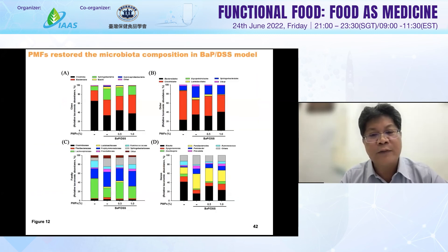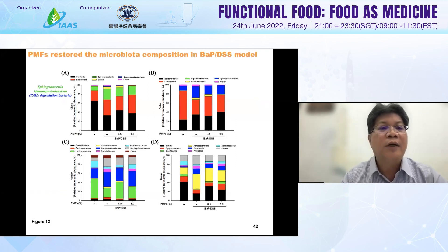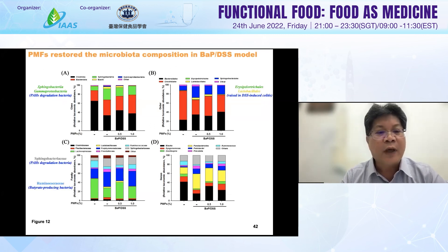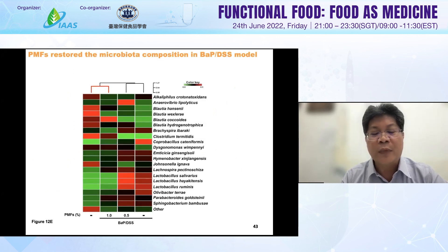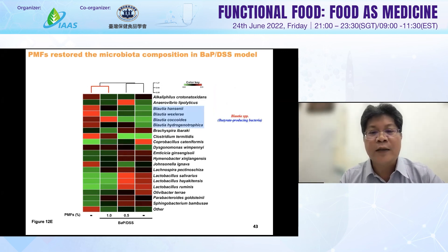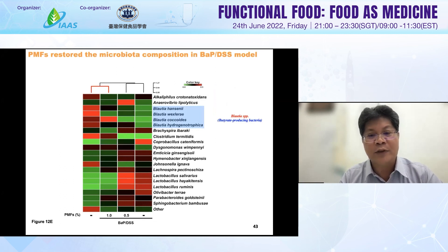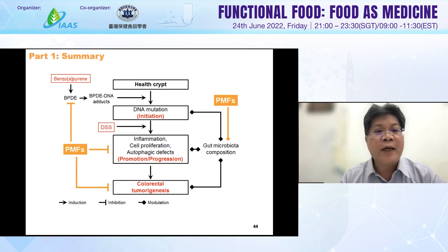We also checked the microbiota. We found single bacteria, PAH-degrading bacteria, and butyrate-producing bacteria, such as Ruminococcaceae. We also checked the microbiota profile and found interesting results: different kinds of genes were increased by PMF treatment and the BAP+DSS-induced gene changes in microbiota composition were restored.